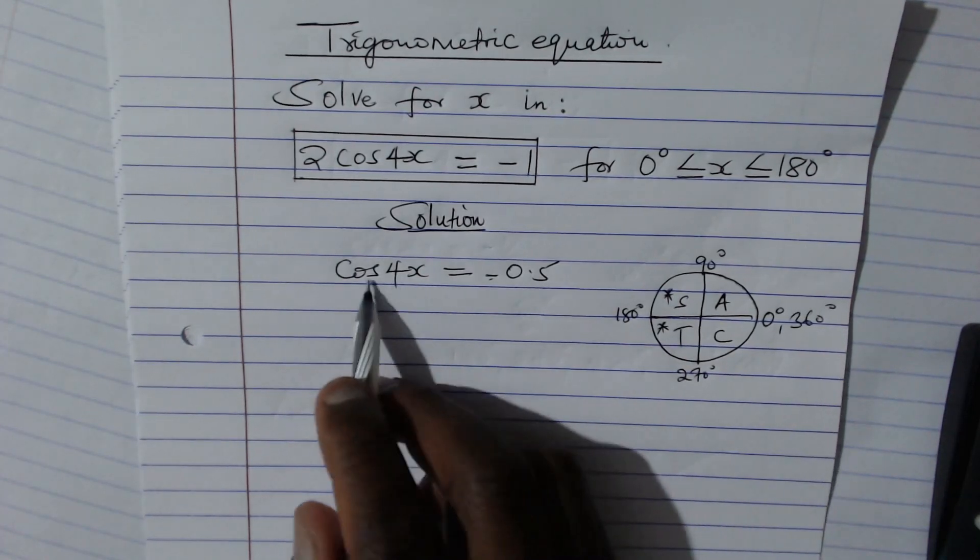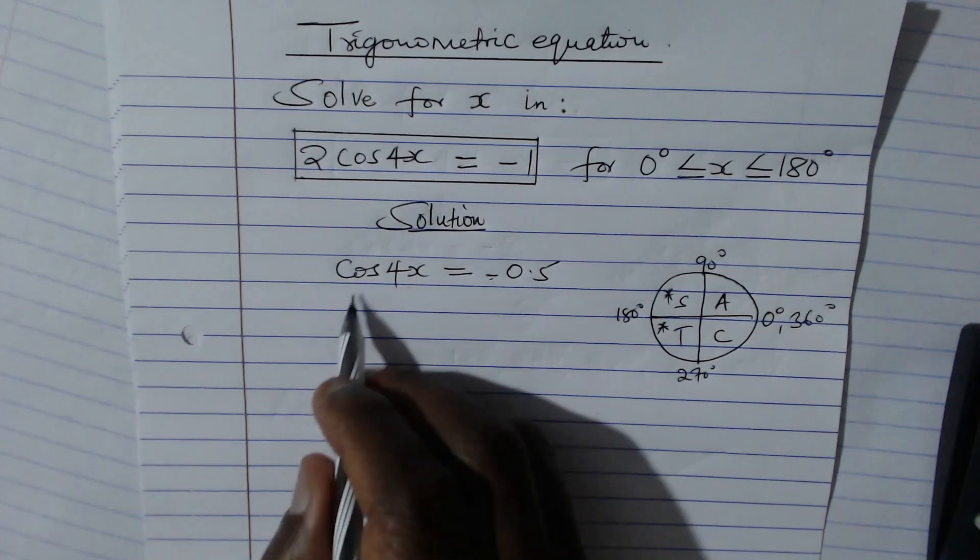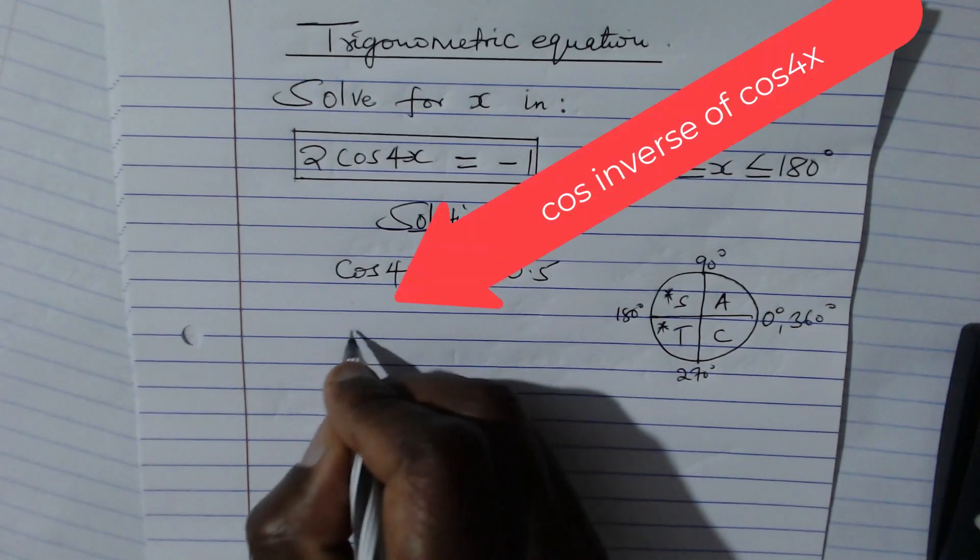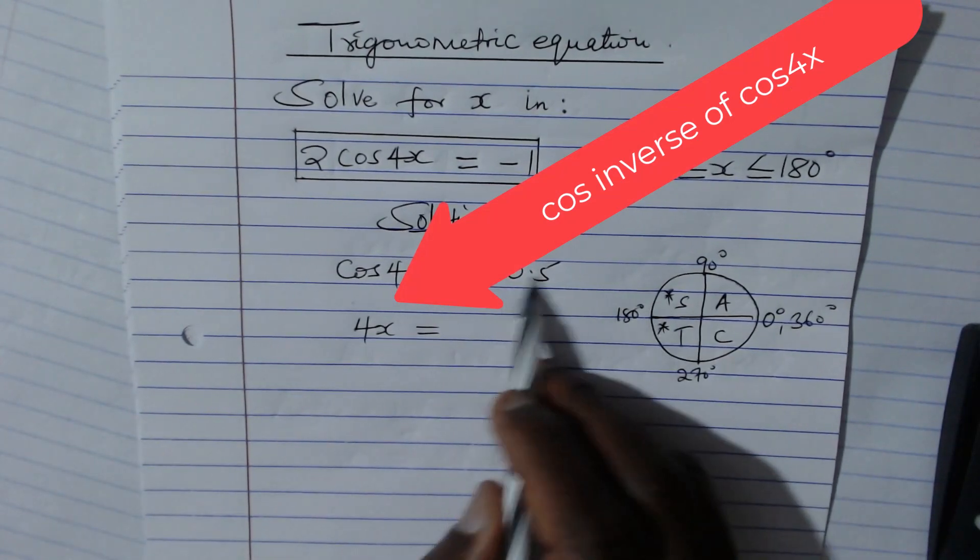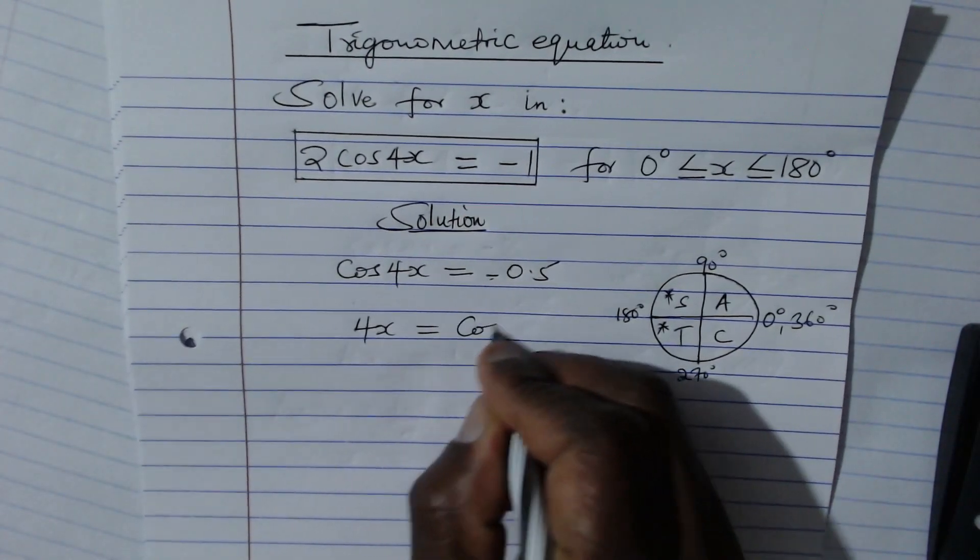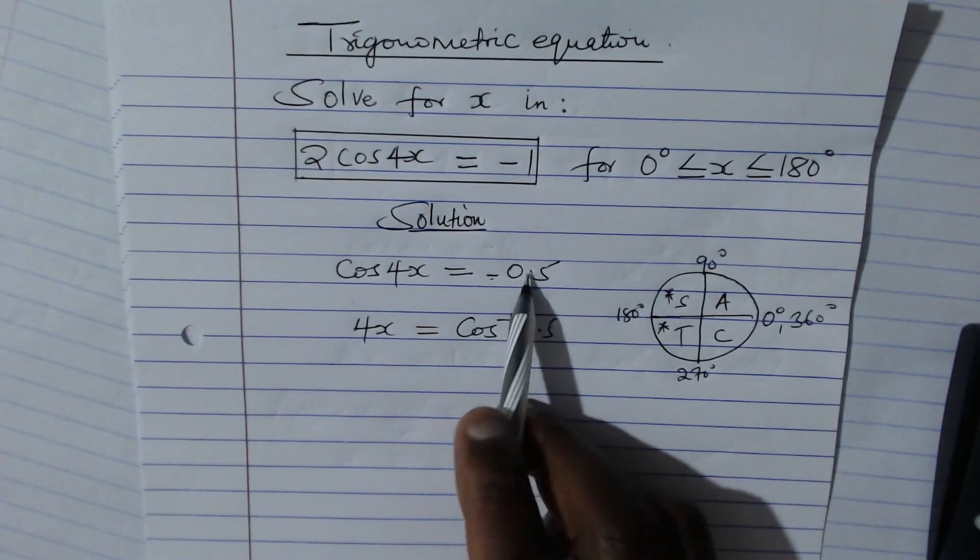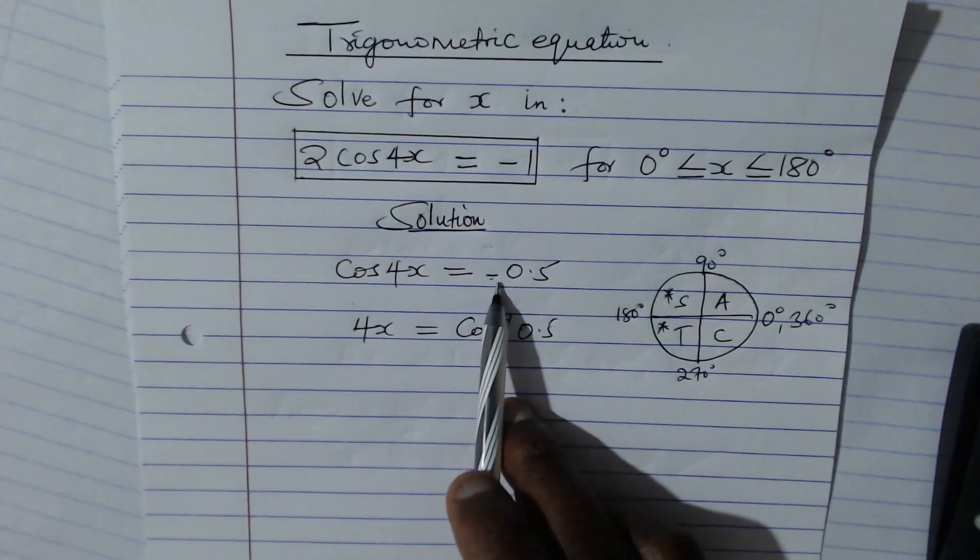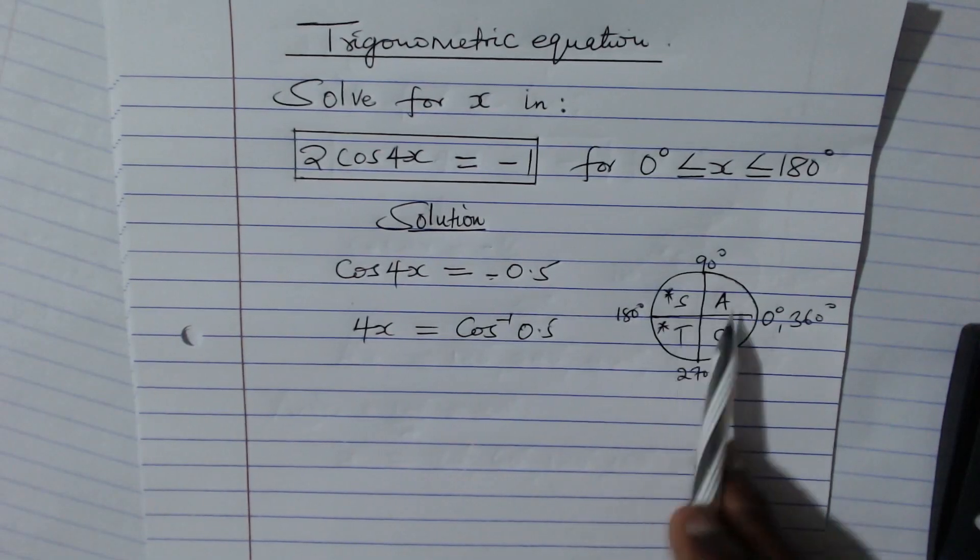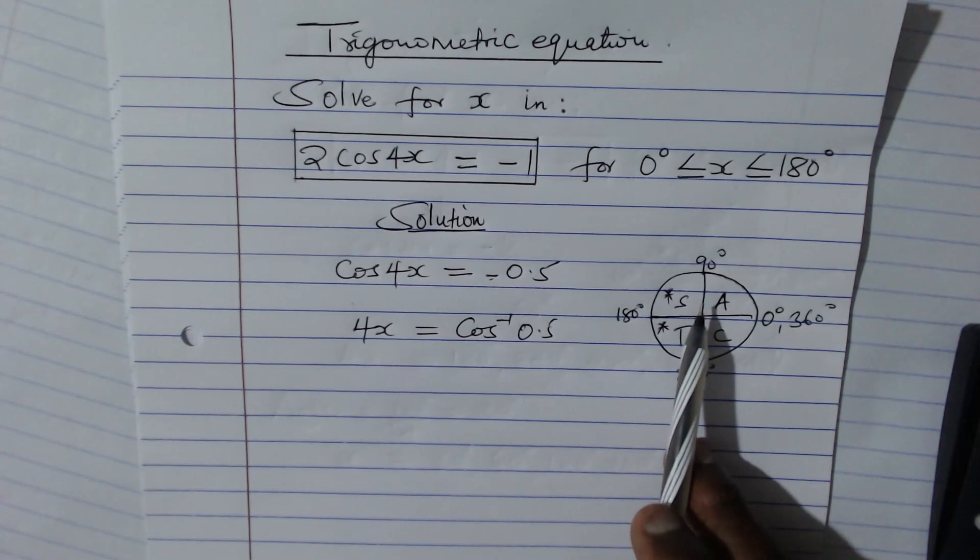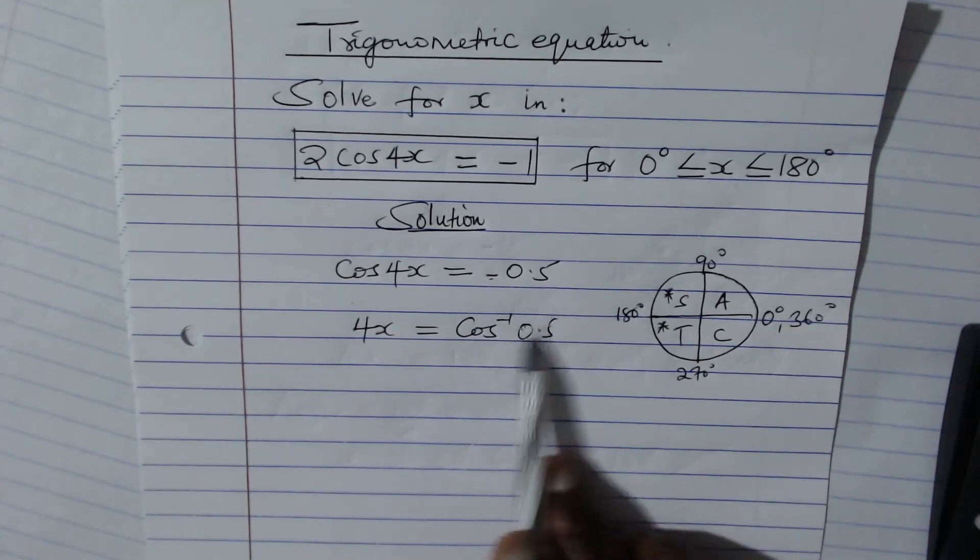So therefore, when you're getting x, to remain with 4x, get the cos inverse. You remain with 4x = cos inverse of 0.5, not negative 0.5. The negative side, and I repeat, will help us to locate where the angles are. And specifically, it is where cosine is negative. That is where we're going to use it.